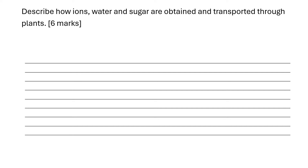So this question says: describe how ions, water and sugar are obtained and transported through the plant. Six marks. So we've got to describe how they're obtained and how they're transported, and we've got to talk about ions, water and sugar.